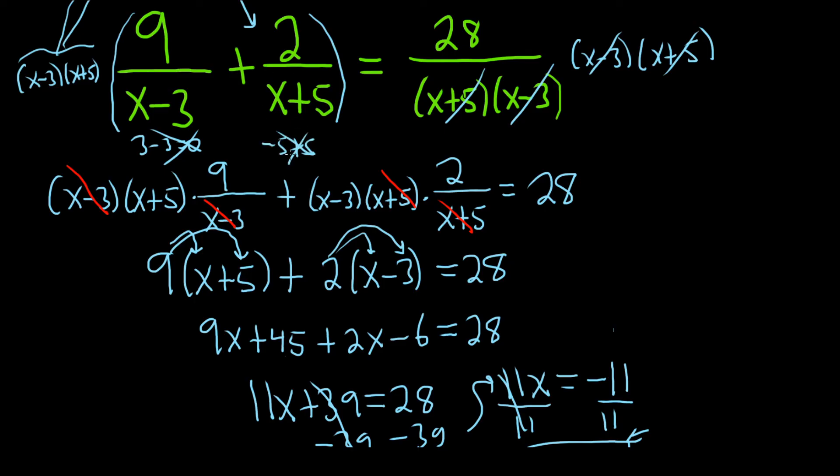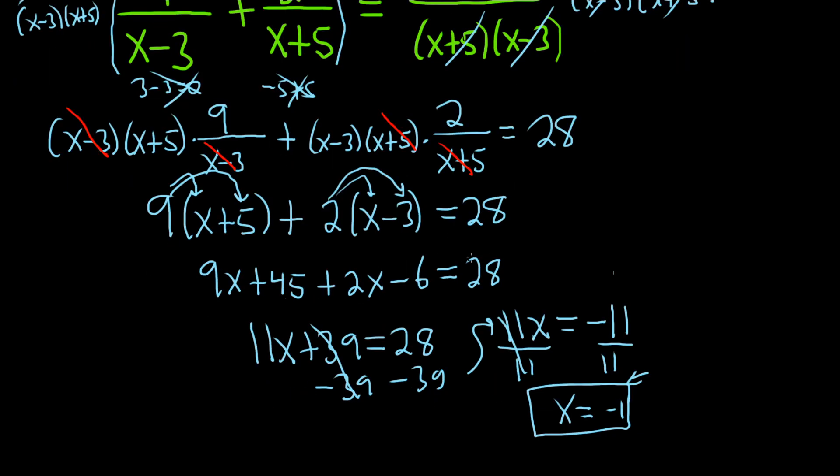Or if you would have gotten an answer like negative 5, that would be a problem, right? Because you can't plug in negative 5. But we didn't, right? We got an answer of negative 1. So that is the solution.